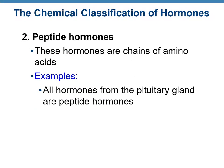The second type of hormones is peptide hormones. The word peptide means a linear chain of amino acids, so these hormones are chains of amino acids and are some of the simplest proteins. All hormones from the pituitary gland are peptide hormones.